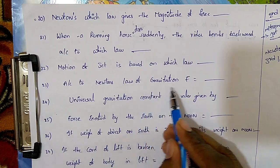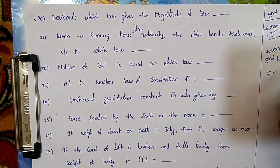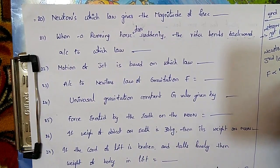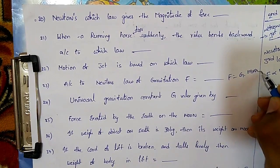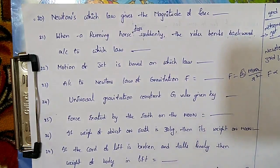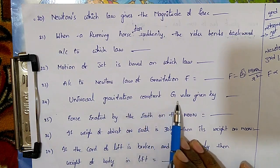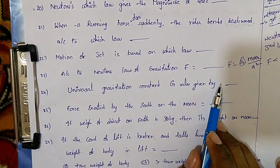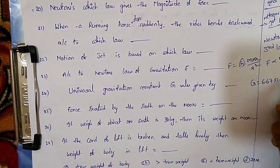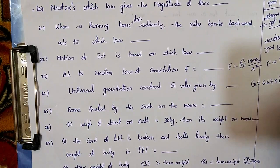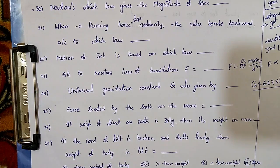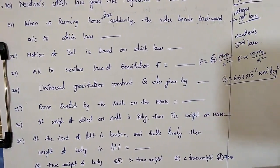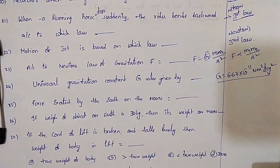According to Newton's law of gravitation, force is proportional to M1 times M2 divided by R squared, so force equals G times M1 times M2 divided by R squared, where G is the universal gravitational constant. The value of G is 6.67 × 10 to the power of minus 11 Newton meter squared per kilogram squared.